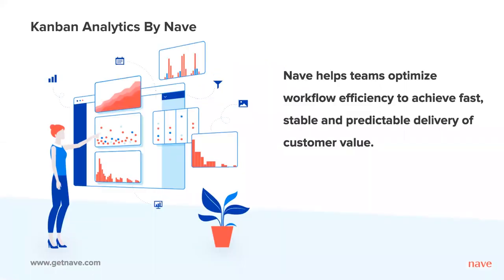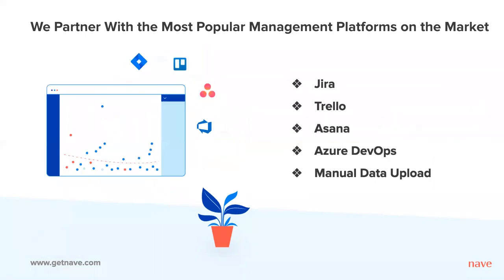NAVE is a Kanban analytics suite that helps teams optimize their workflow performance in order to achieve fast, smooth and predictable delivery of customer value. We help managers establish a stable system to develop more predictability in their delivery processes, and we enable customers to identify impediments in their workflow as well as make accurate delivery forecasts. We provide integrations with Jira, Trello, Asana, and Azure DevOps. NAVE is available as an add-on in the Atlassian Marketplace and Trello Power-Ups directory. We also provide a manual data upload version for customers using Jira Server whose instances are not publicly available — suitable for strict security policies where you need to anonymize your data.